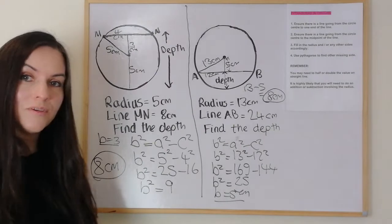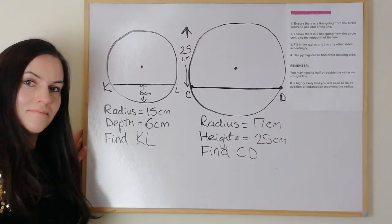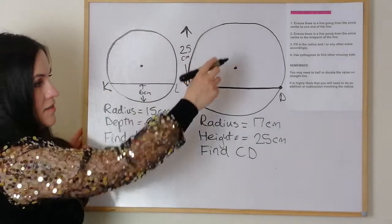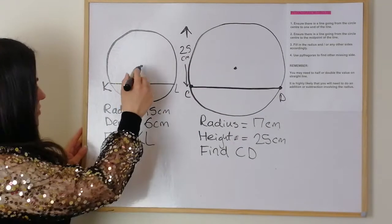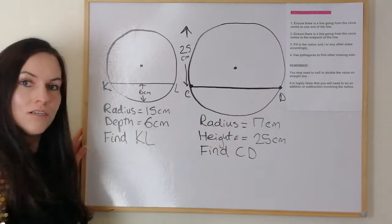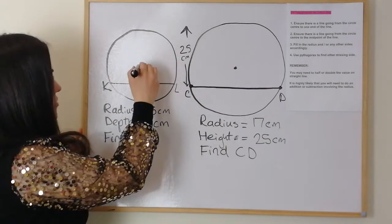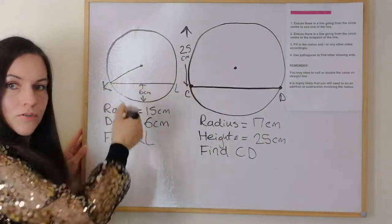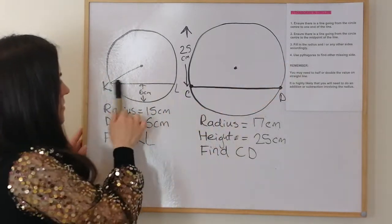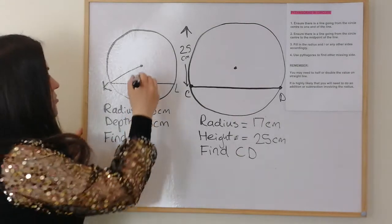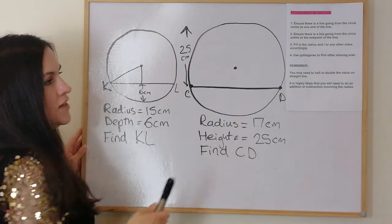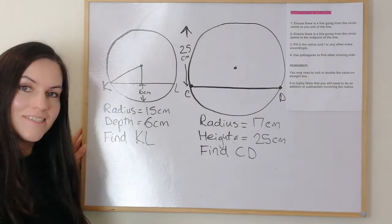I'm going to do another couple of examples applying the same set of rules. Looking at this one: step one, ensure there's a line from the circle centre to one end of the line. Step two, ensure there's a line from the circle centre to the midpoint. Step three, fill in the radius and/or any other missing sides — the radius is 15 centimetres.